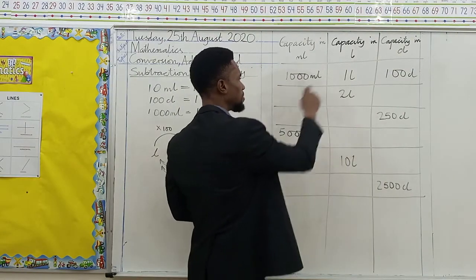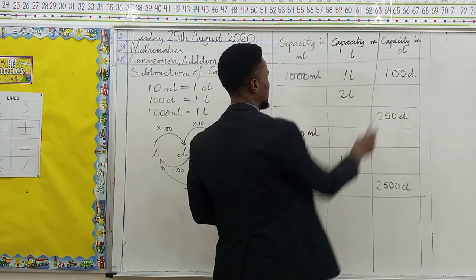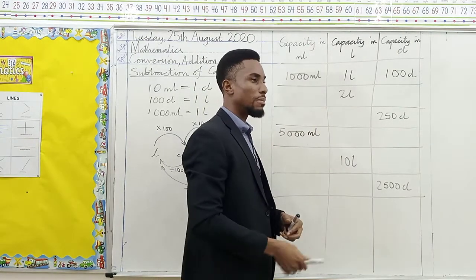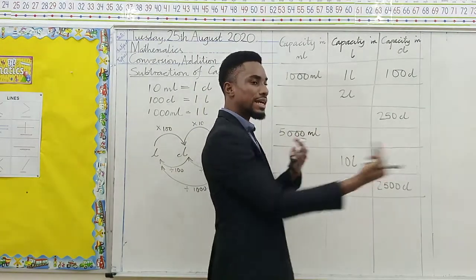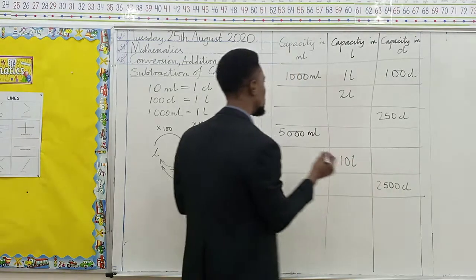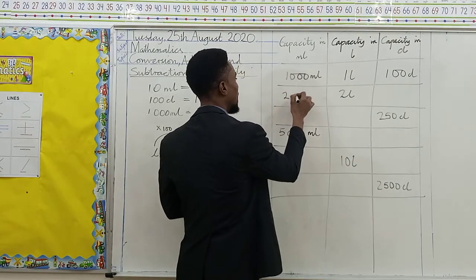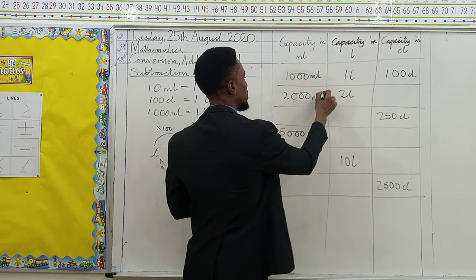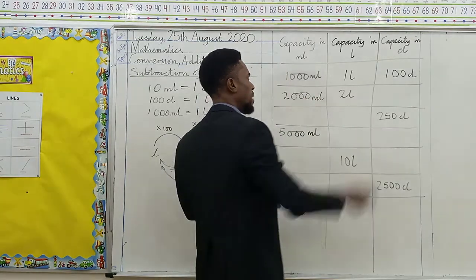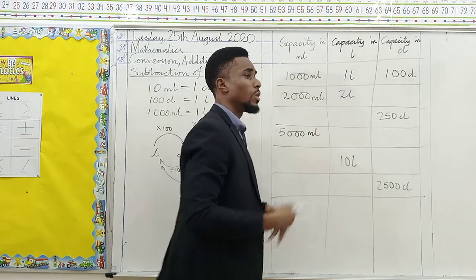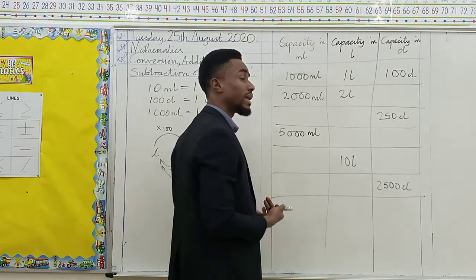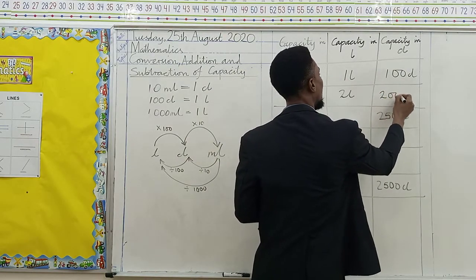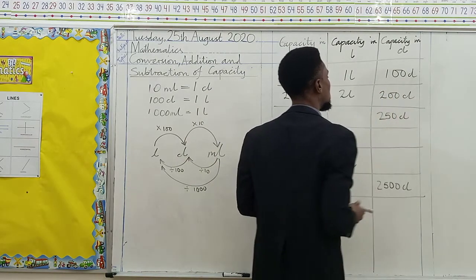Now we are changing from liters to milliliters and from liters to centiliters. Liters to milliliters — we multiply by 1,000 or we attach 3 zeros to the end. So this is going to be 2,000 milliliters. Liters to centiliters — we attach 2 zeros or we multiply by 100. So this is going to be 200 centiliters.